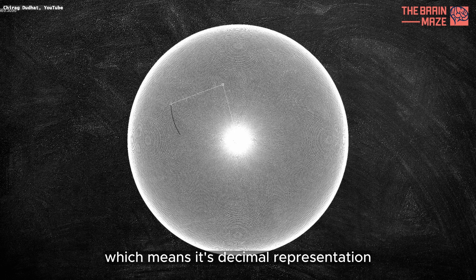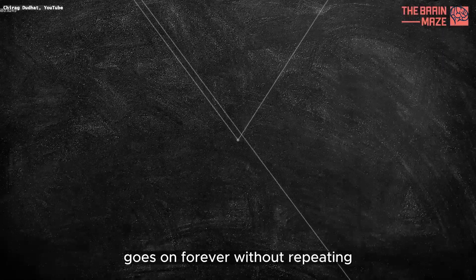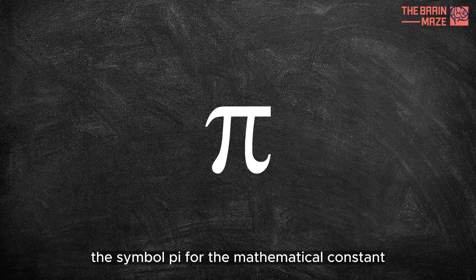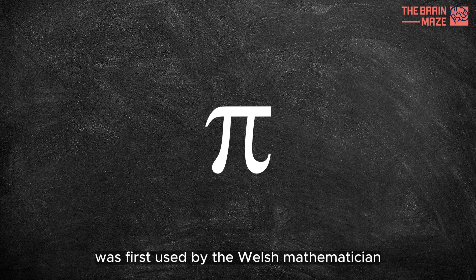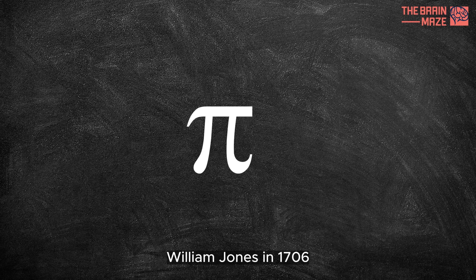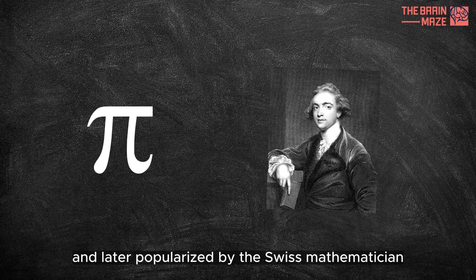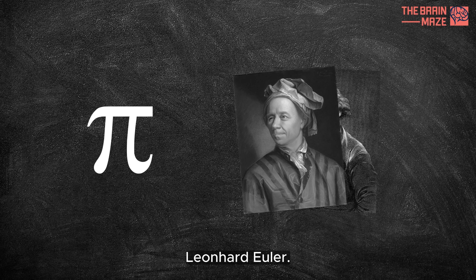which means its decimal representation goes on forever without repeating. The symbol pi for the mathematical constant was first used by the Welsh mathematician William Jones in 1706 and later popularized by the Swiss mathematician Leonard Euler.